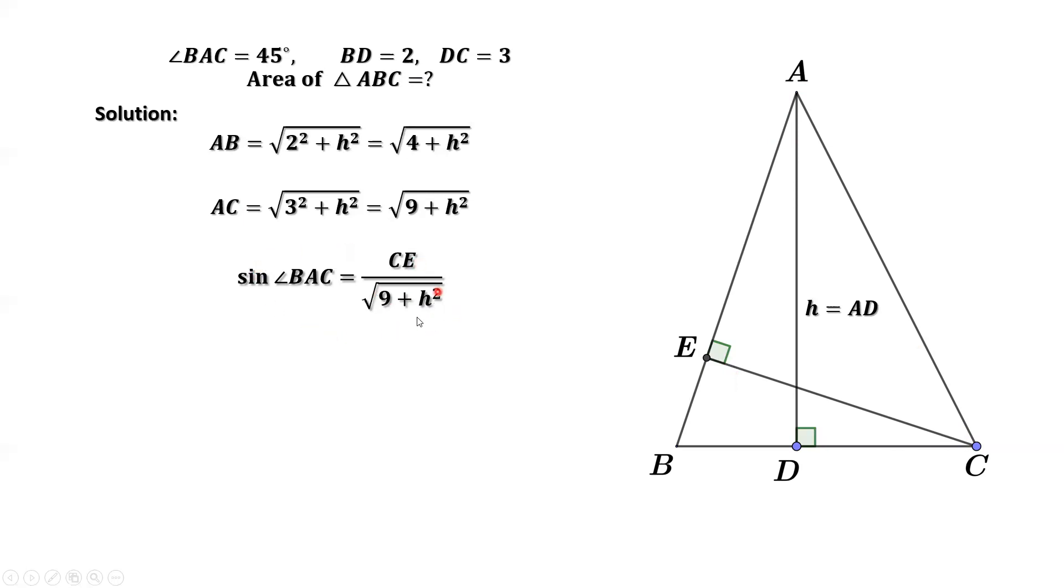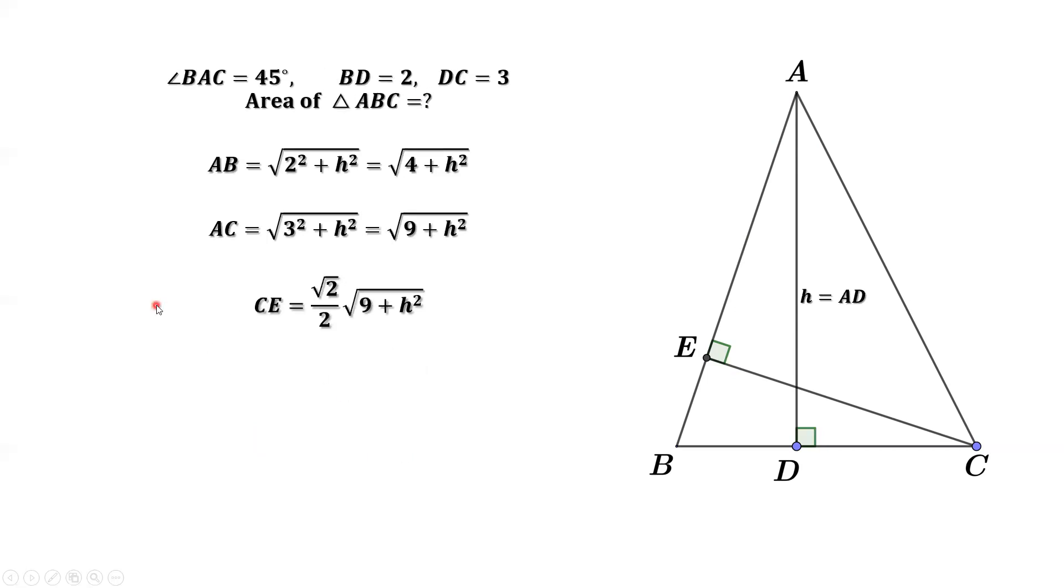Solve this equation for CE. CE equals sine angle BAC times square root of 9 plus H square. This angle is 45 degrees. 45 degrees, the sine value is square root of 2 over 2. This implies CE equals square root of 2 over 2 times square root of 9 plus H square.